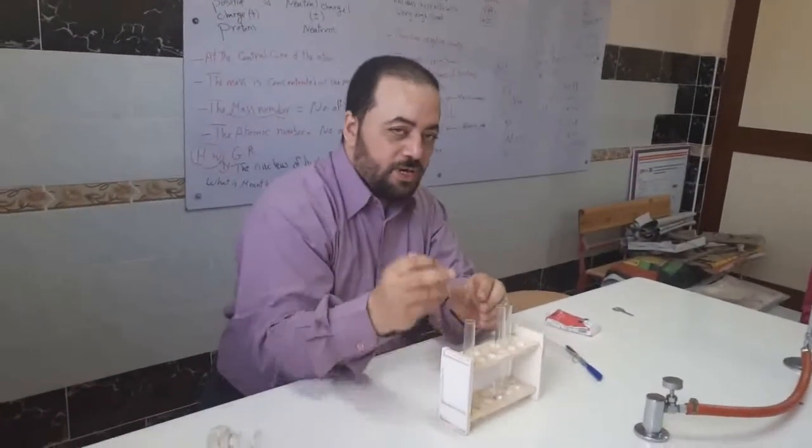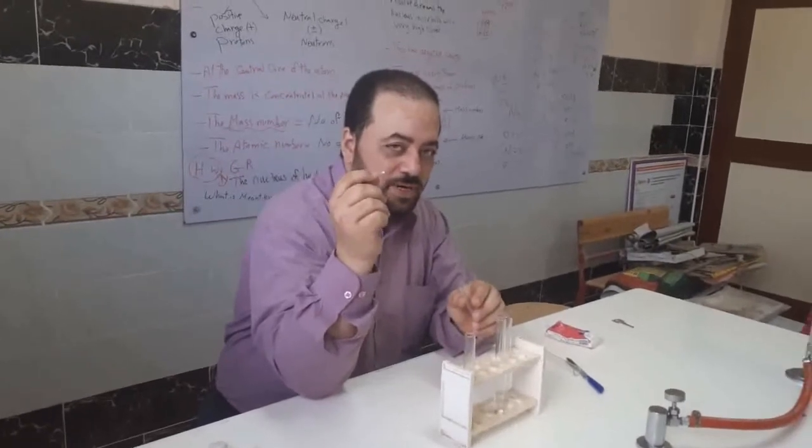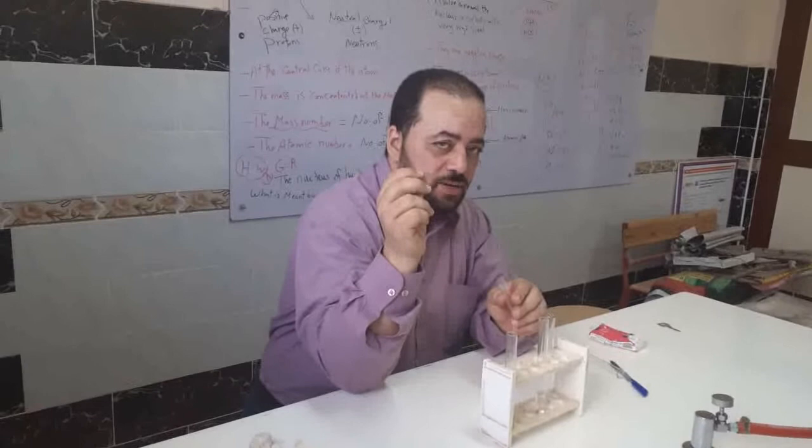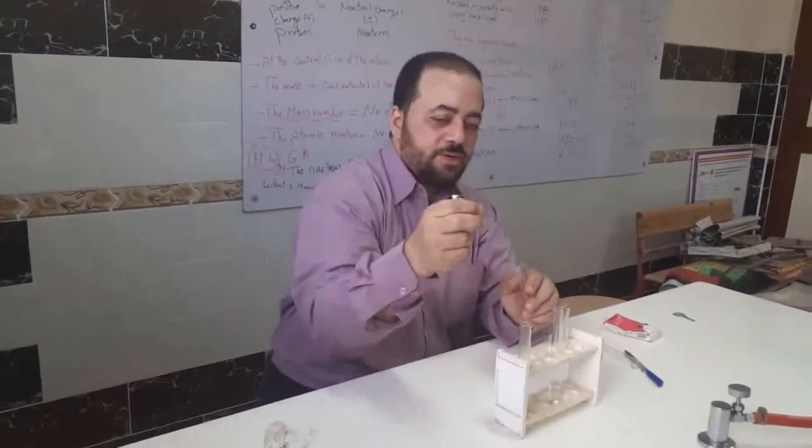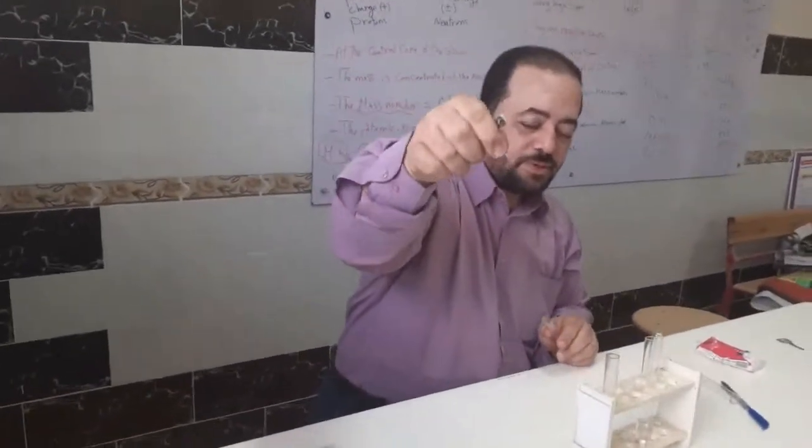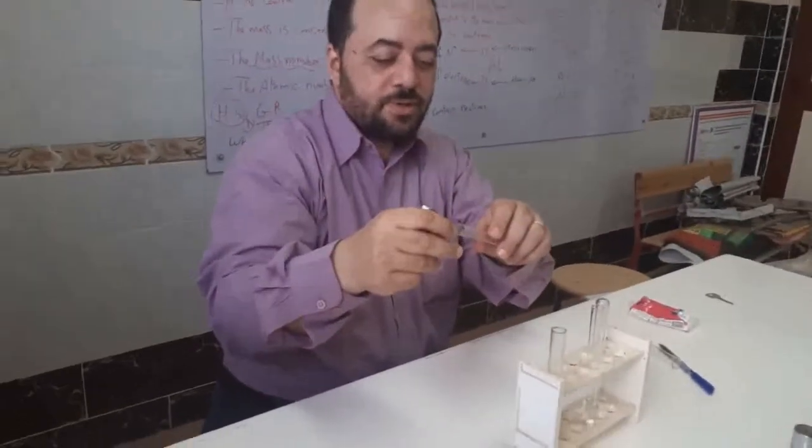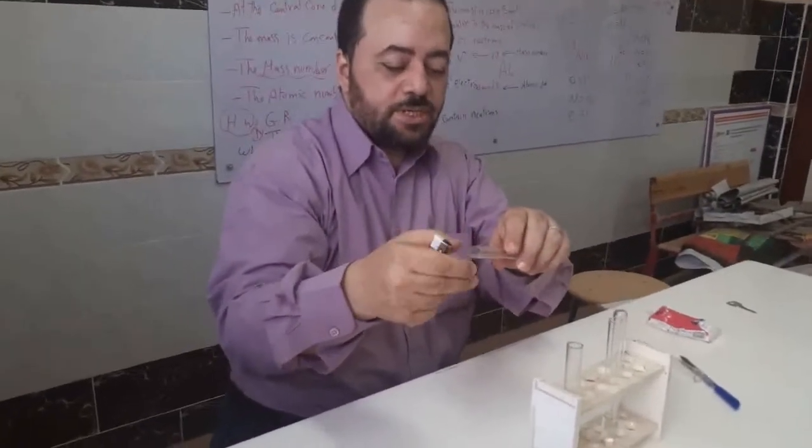Now we do another experiment. The reaction between magnesium and oxygen forms magnesium oxide which is a white powder. This is the magnesium strip. We will burn the magnesium strip.